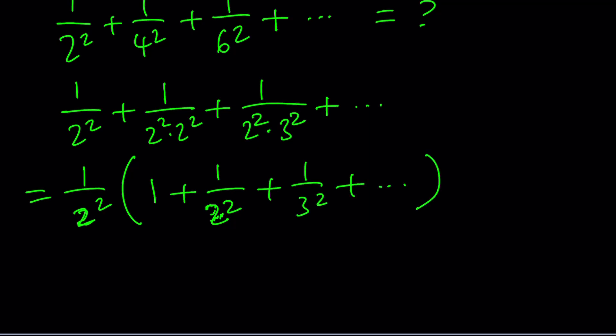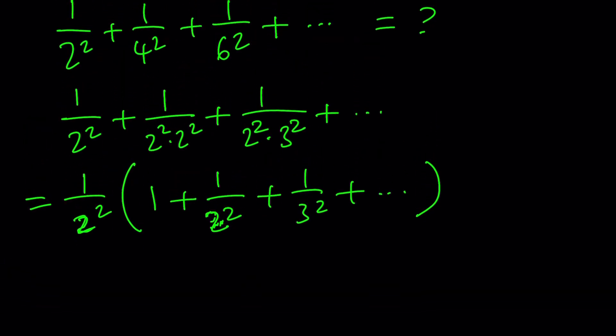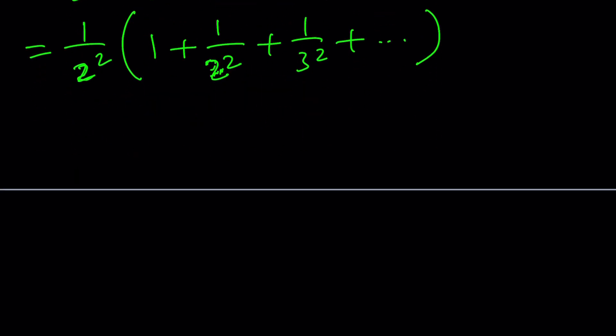This gives us something interesting - while trying to find the sum of the reciprocals of the even squares, we ended up with the whole sum, which is something we know. That's good, because when solving a problem, you want to use something you know.